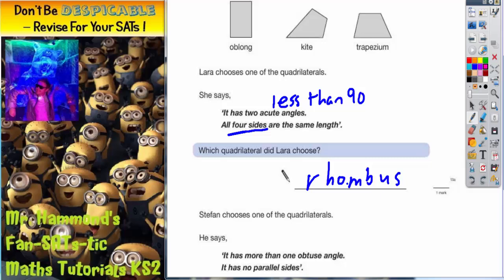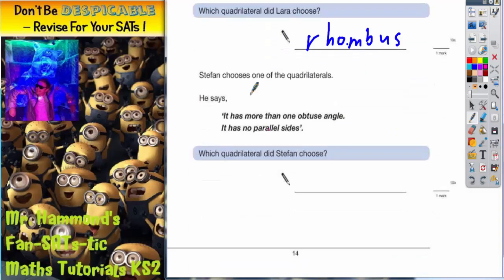We've got a different call for part two. Stefan chooses one of the quadrilaterals. And he says it's got more than one obtuse angle and it has no parallel sides. Which quadrilateral did he choose?